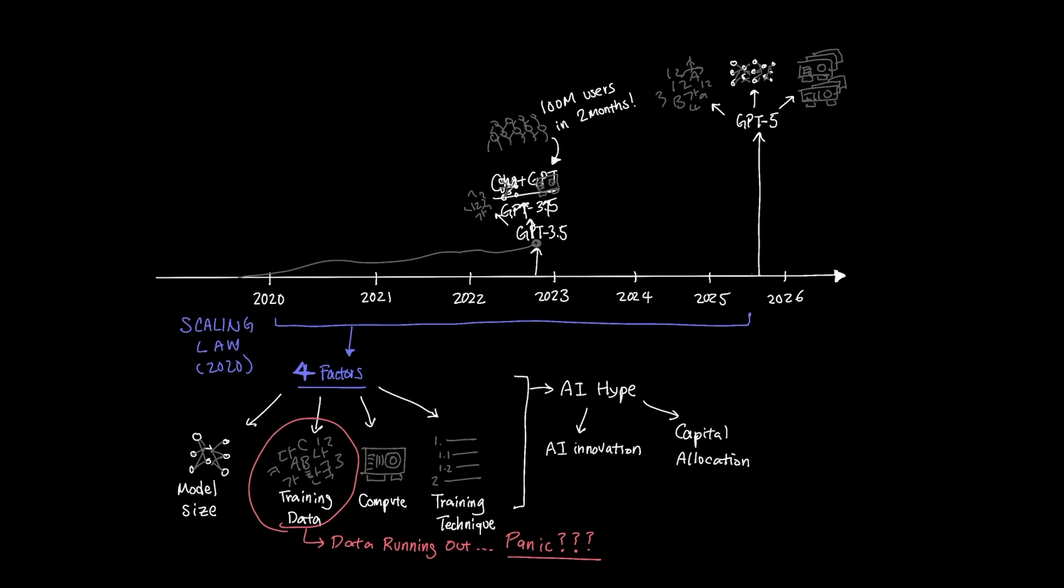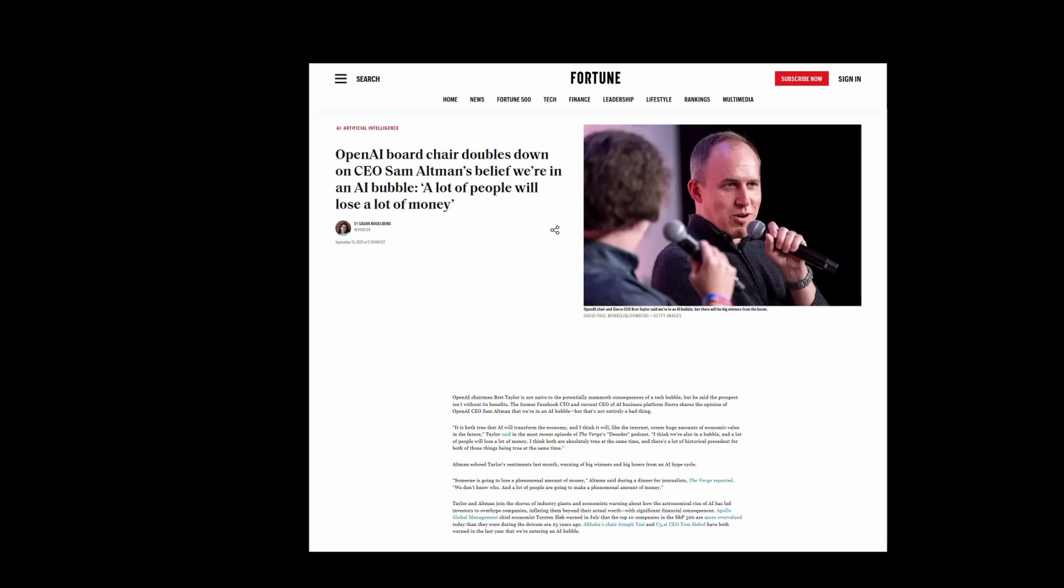But whether AI hype truly exists in the AI innovation side or not, there certainly seems to be indication in the capital allocation side of AI. Sam Altman, the CEO of OpenAI, recently and famously said that AI is in a bubble and a lot of people will lose a lot of money, signaling that maybe AI hype truly exists in how we allocate capital in AI companies.